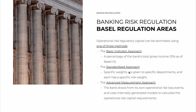Then we have the standardized approach, analogous to the two previous categories. We have specific weights, but instead of for specific assets, we have them for specific departments. For example, asset management is 12%, so if you have $100 billion of revenue for that department, it's $12 billion for that department. Payments is 18%, so if you have $100 billion of revenue in that department, it's $18 billion. And just like with the other standardized approaches, the total is the sum of capital numbers multiplied by risk weights. For these two approaches, the gross revenue used is the average of the last three years.